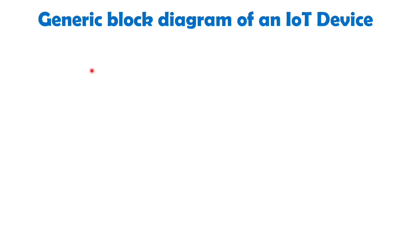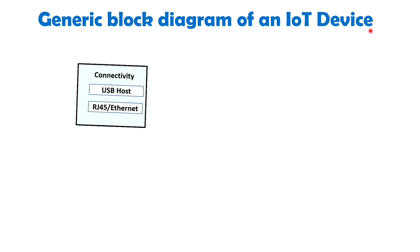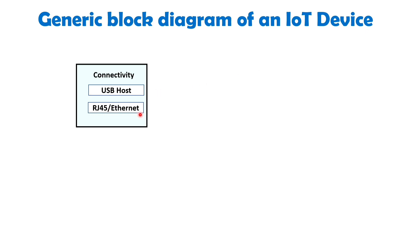Now let's focus on the generic block diagram of an IoT device. The first component is connectivity. In an IoT system, various protocols such as USB host and Ethernet are employed to establish connectivity between devices and servers. These connectivity options enable the seamless transfer of data, facilitating communication and data exchange within the IoT network.